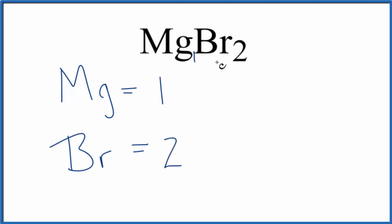If you were asked the total number of atoms in MgBr2, 2 plus 1, that gives us three total atoms in magnesium bromide.